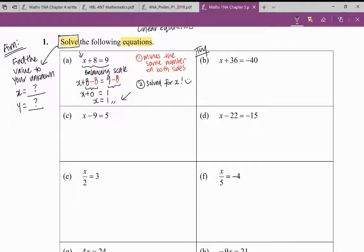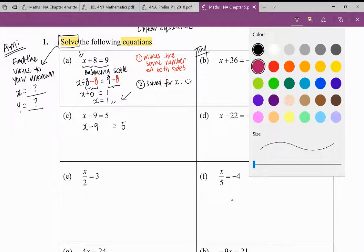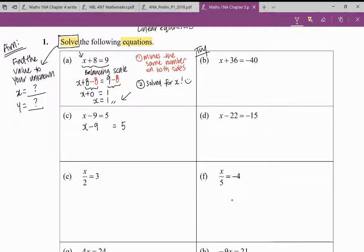Now let's take a look at part c. I have x minus 9. So now instead of deducting 9 again, what should you do? I hope you got it. So instead of like what I did in 1a where I minus 8, now I should plus 9.